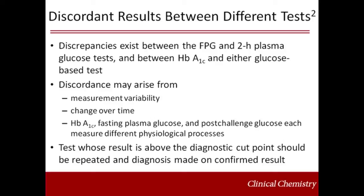Such discordance may arise from measurement variability, change over time, or because hemoglobin A1C, fasting plasma glucose, and post-challenge glucose each measure different physiological processes. When two different tests are available in an individual and the results are discordant, the test whose result is above the diagnostic cut point should be repeated and the diagnosis made on the basis of the confirmed test.